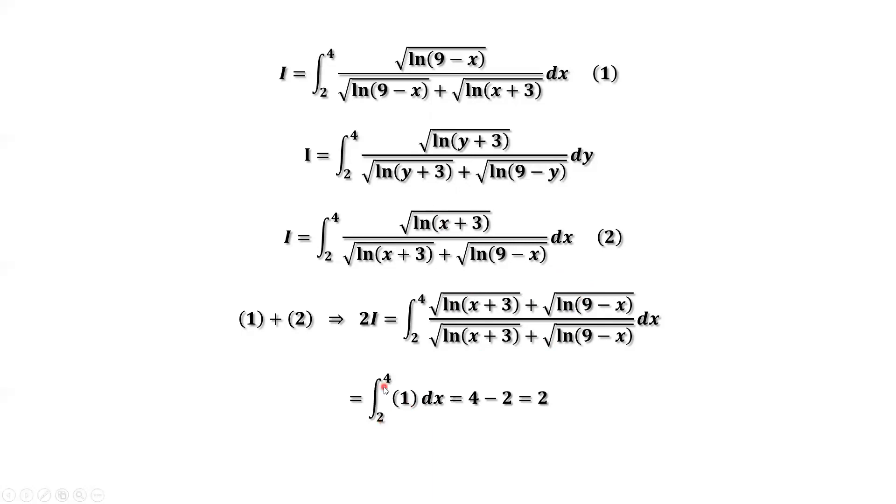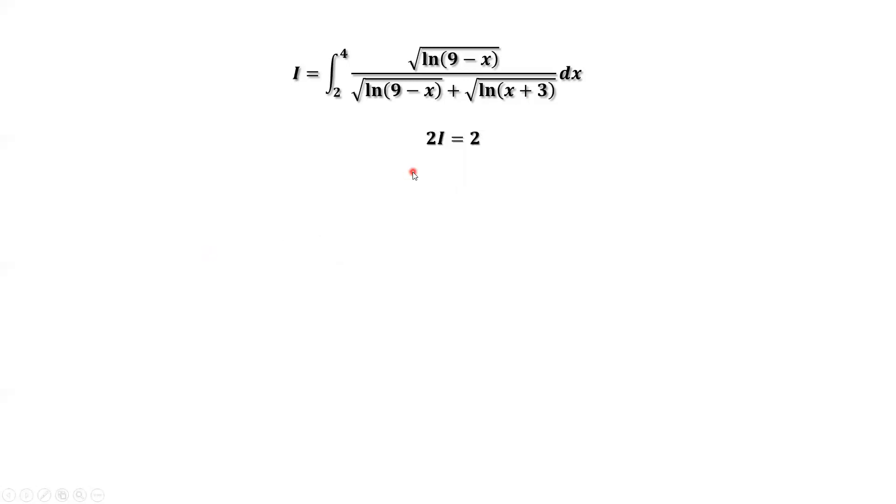The integral of a constant equals 4 minus 2 times 1, which is 2. 2 is the answer for 2I. What is I? Both sides divided by 2. We have I equals 1.